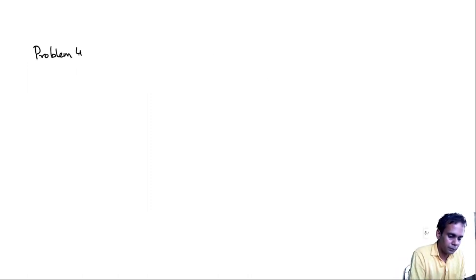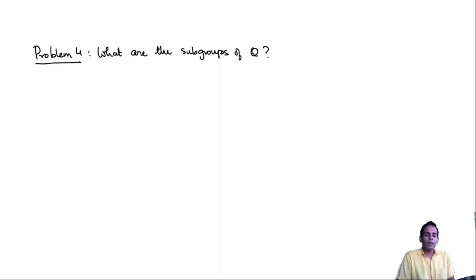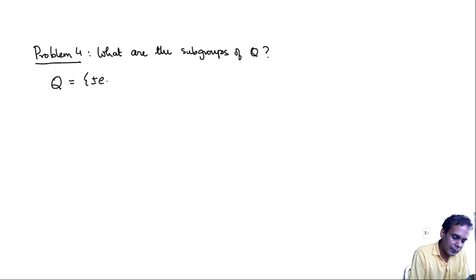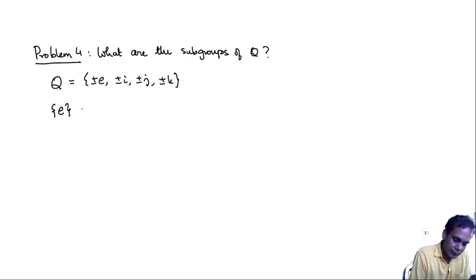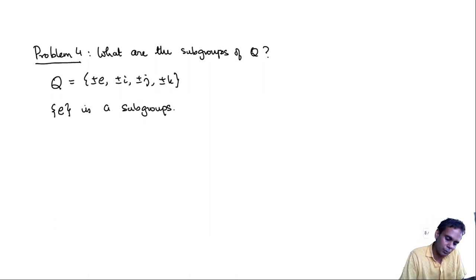Problem 4: what are the subgroups of Q? I urge you to pause your video and try to solve this problem yourself. Q has eight elements: ±e, ±i, ±j, ±k. In any group there is always the trivial subgroup, so {e} itself is a subgroup — it is a subset of Q, closed under multiplication (e·e = e), closed under inverse, and the identity is in it.